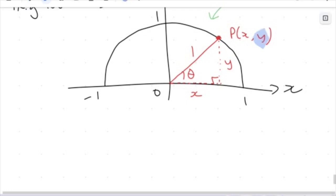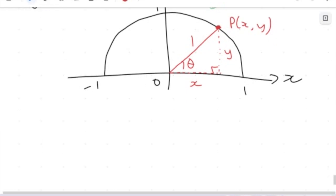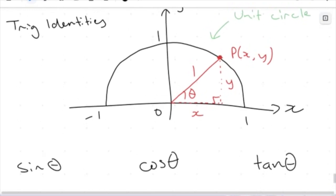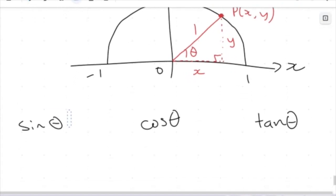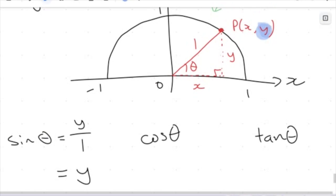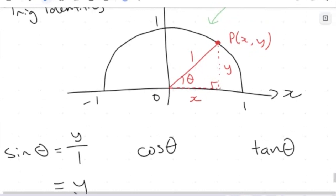Let's just set up a couple of trig ratios — sine theta, cos theta, and tan theta — to see how we can relate these trig ratios to our unit circle and our xy graph. Sine theta equals opposite over hypotenuse. The opposite here is going to be y, so that's y over 1, my hypotenuse. Because y divided by 1 just gives me y, sine theta here corresponds to how far up my coordinate is — the y coordinate. So this point P(x, y), we can also write the y as sine theta.